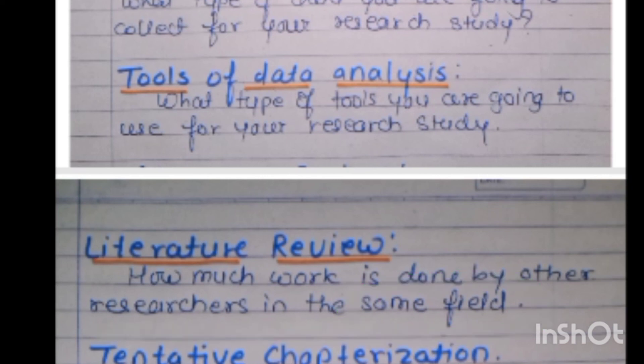After that comes tentative chapterization — you have to divide the whole work into chapters. You complete the introduction part first, then literature review, then data collection and data analysis, and so on. You divide clearly so you can complete the work. Finally, references — you have to list the references, naming the articles and linking them here.